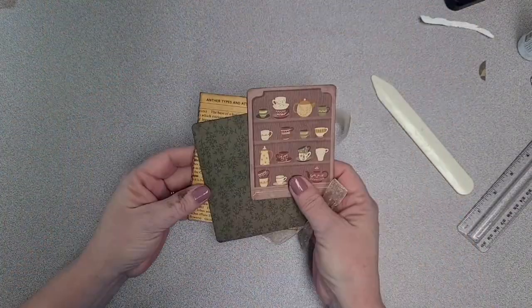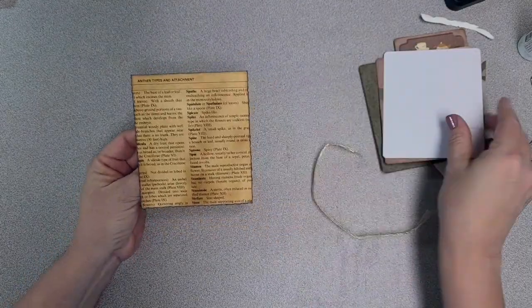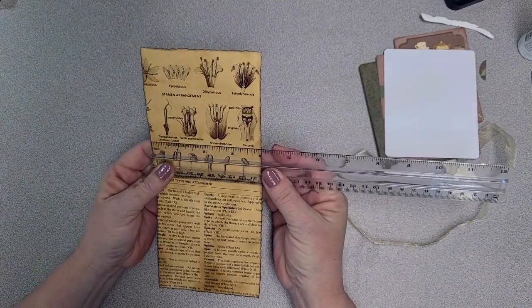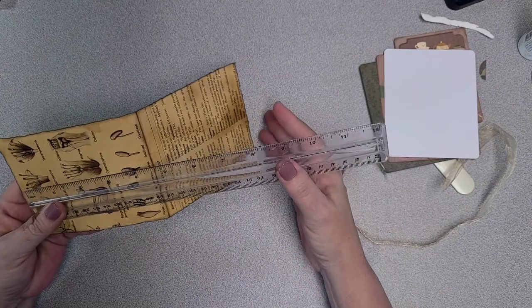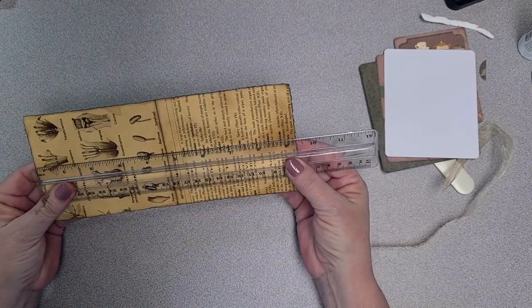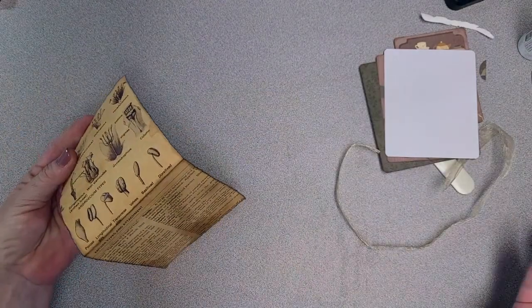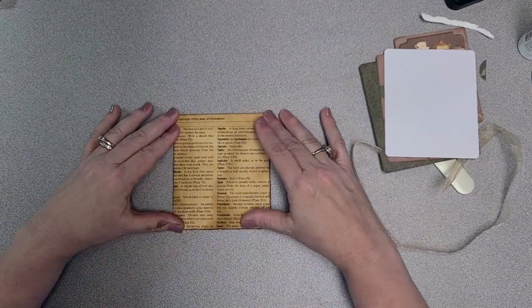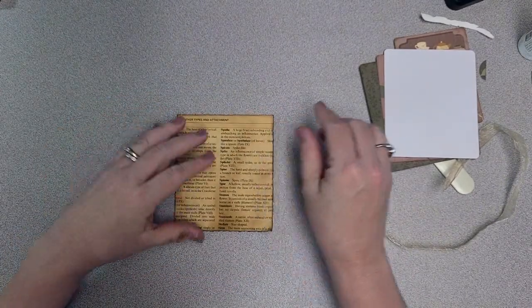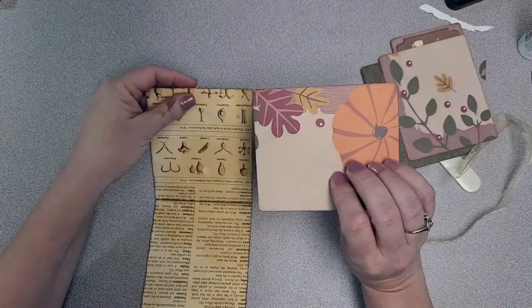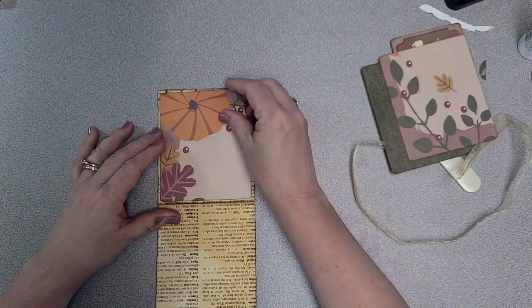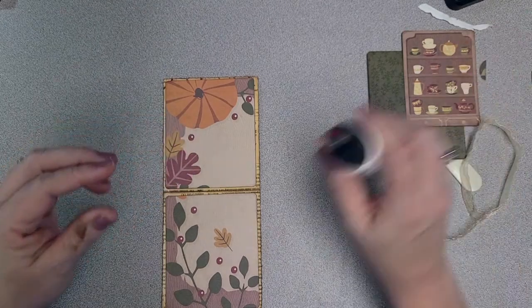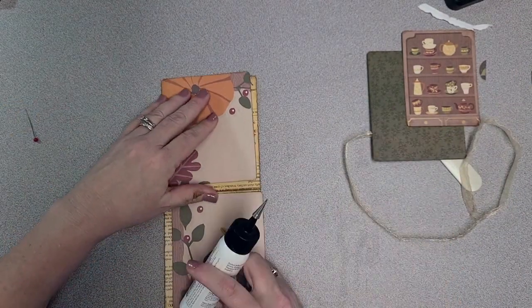Then for my third one, I've got this piece of book page that I tore to four inches wide by about nine and a quarter inches long. I just folded it in half and inked around the edges. For this one, I've got some scrapbook paper. I'm going to glue it on the inside. This will basically be a folded journaling card.